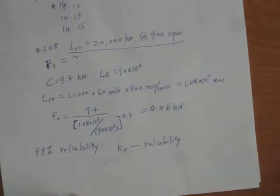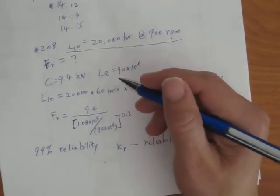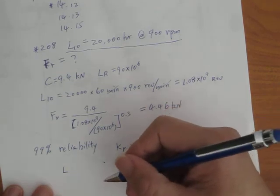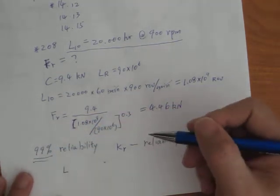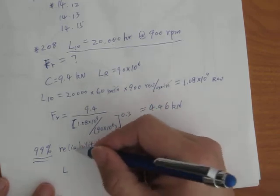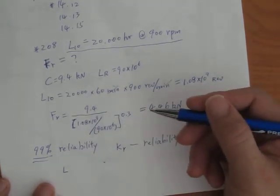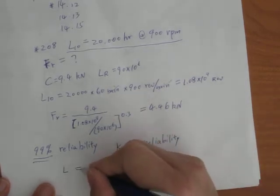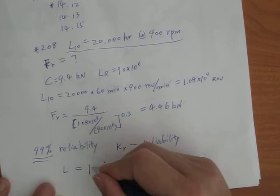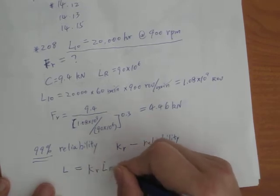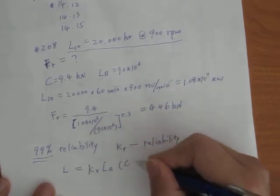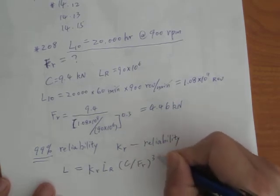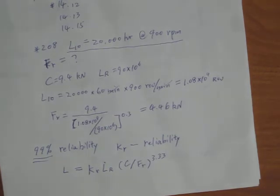Now okay, with this KR in mind, the formula changes. The L, now we don't call it L10 because it's 99%, not 90%, it's any other percentage, so we don't use L10 anymore, we just use L. L is equal to the bearing life equal to KR times LR times C divided by FR radial load to the 3.33. Okay, so it changes like that.